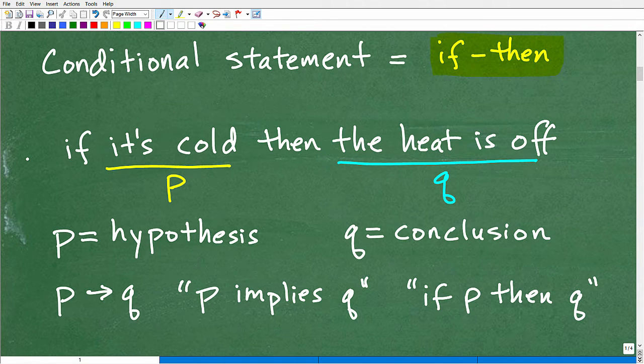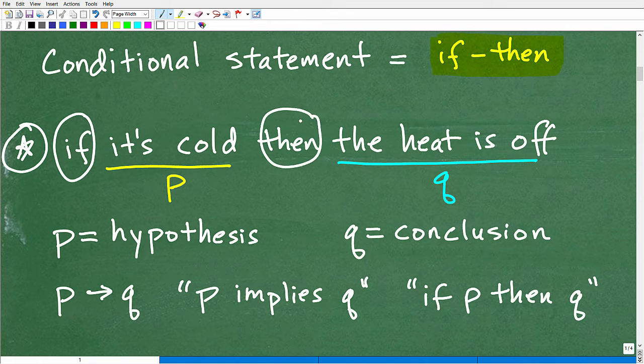So here is an example. I got some stuff written out of here, but just follow me along right here. So here's an if then statement. So if it's cold, then the heat is off. That's a statement. Now, I'm not trying to argue whether this is right or wrong. It's just a simple if and then statement. This is a conditional statement.